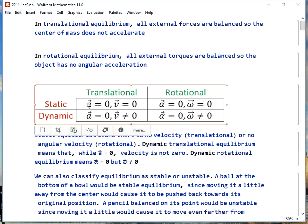For example, static translational equilibrium would be if your car is parked. Dynamic translational equilibrium would be if you have the cruise control on.